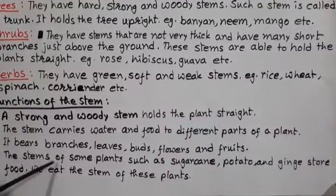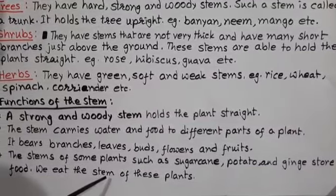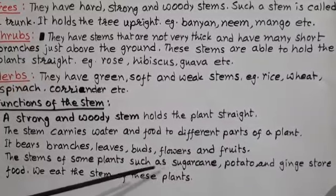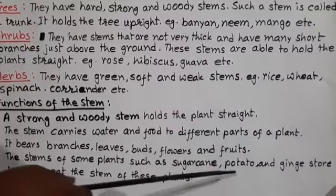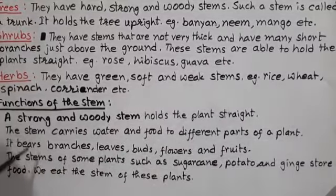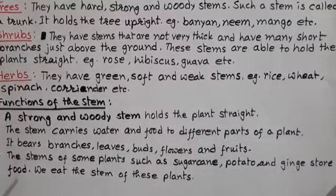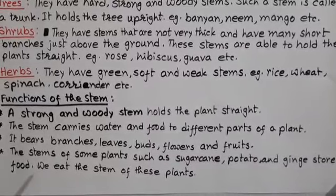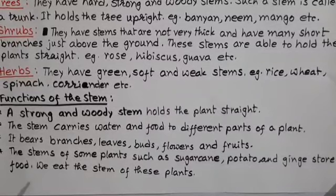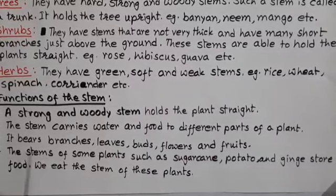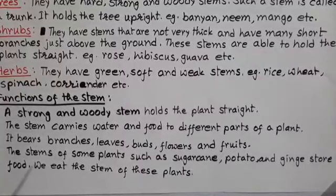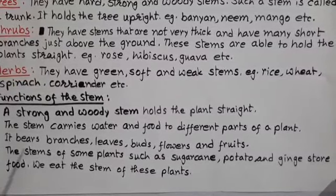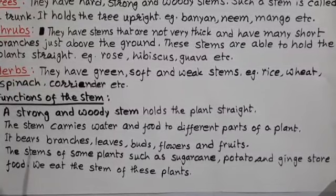Now let us discuss this. Sugar cane — this stem we see above the ground. But potato and ginger, these two stems stay under the ground. That is why this kind of stem is known as underground stems. So if anybody asks you to name some underground stems, your answer will be potato, ginger, etc.